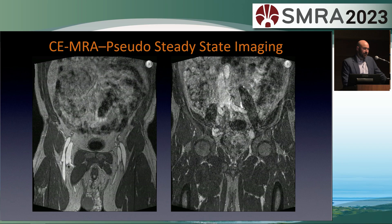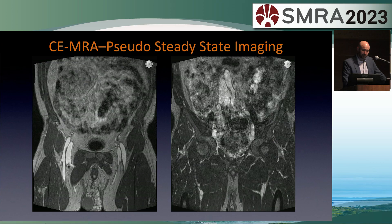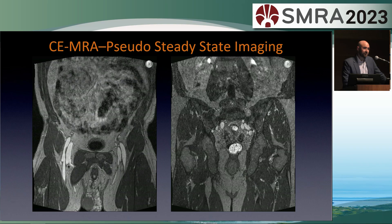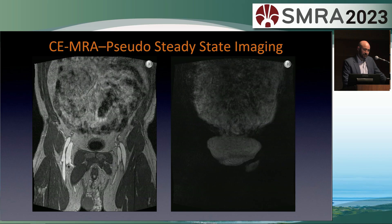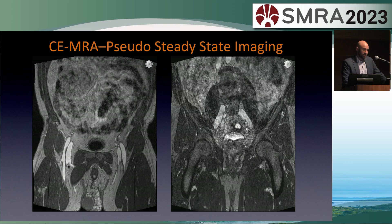Steady-state imaging can be done with blood pool contrast agents. Ablavar used to be available; nowadays it would be Feraheme, Feramoxol. You can give it in the waiting area, bring patients into the imaging suite, and image in the steady state, or give it in the MRI suite and image at various points after contrast administration as it becomes a blood pool agent. This yields excellent opacification of arteries and veins, with the challenge being timing the acquisition within a reasonable breath hold or under free breathing conditions.